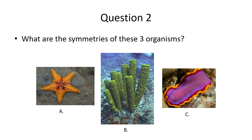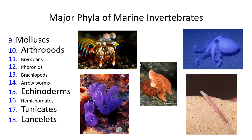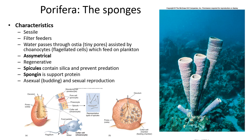We're going to go through the phyla of animals that are most abundant and most present in marine environments: sponges, cnidarians, flatworms, annelids, mollusks, arthropods, echinoderms, tunicates, and lancelets. We'll start with sponges.